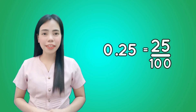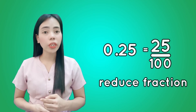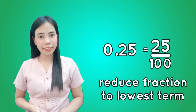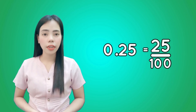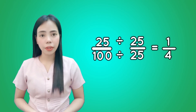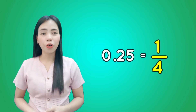This time we used only two different strategies, but we still ended with the same answer. Can we reduce 25 hundredths to lowest terms? The answer is yes. Get the GCF of 25 and 100 — the GCF is 25. Divide both numerator and denominator by 25, and the result is 1 fourth. Therefore, the fraction form of 25 hundredths is 1 fourth.